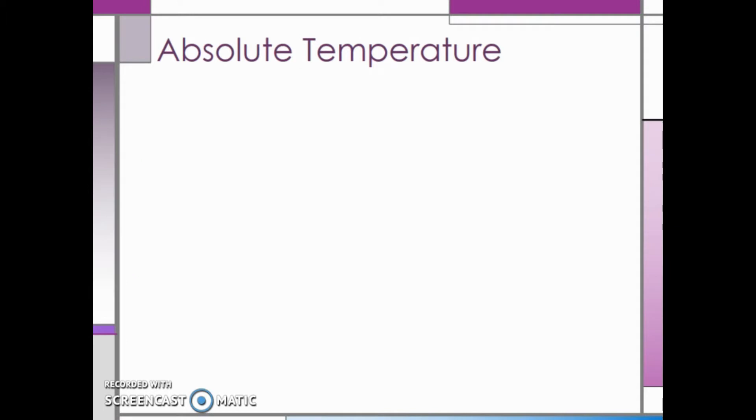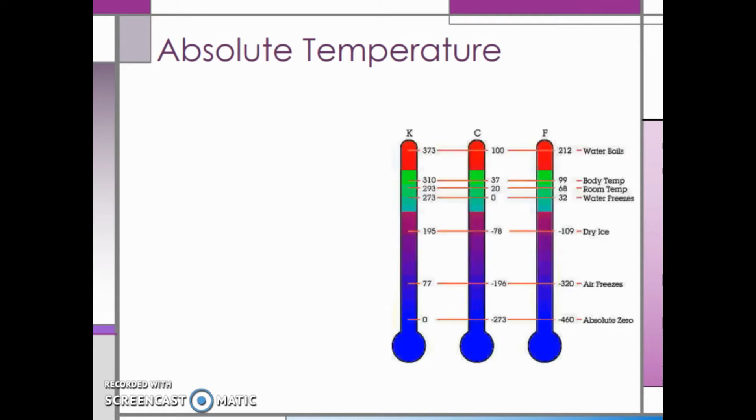In science, we typically use temperature in an absolute scale. Kelvin is the absolute temperature scale. From this picture, we see that the lowest absolute temperature is 0 Kelvin, or minus 273 degrees Celsius.